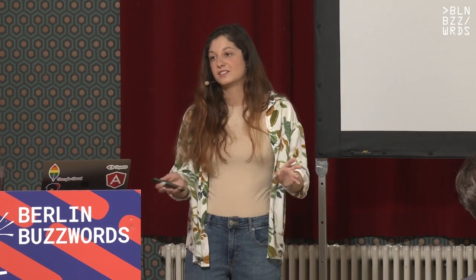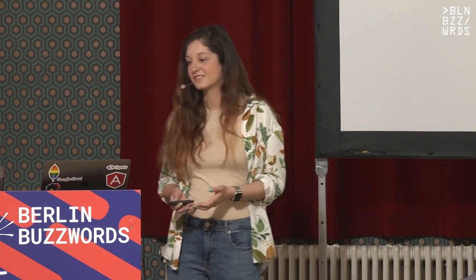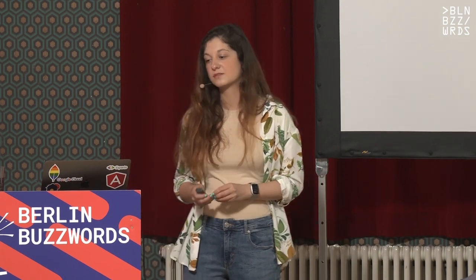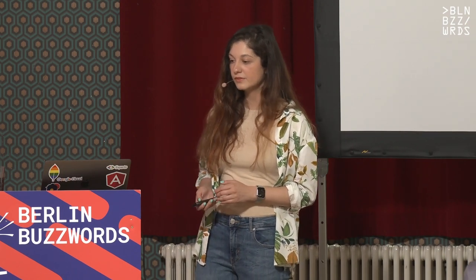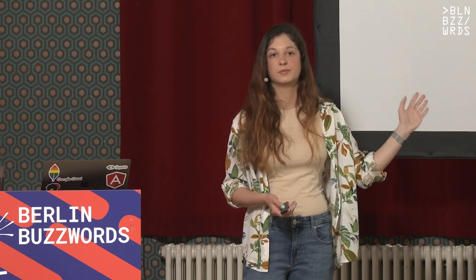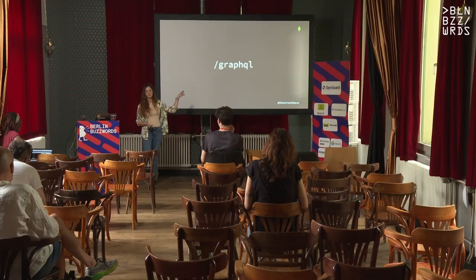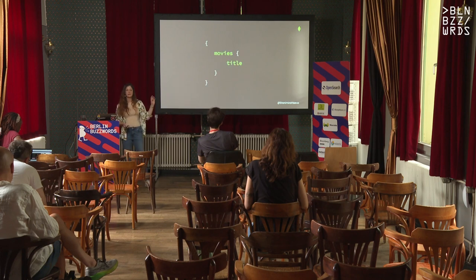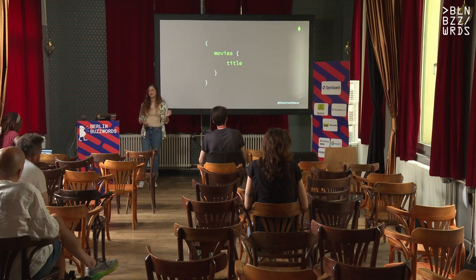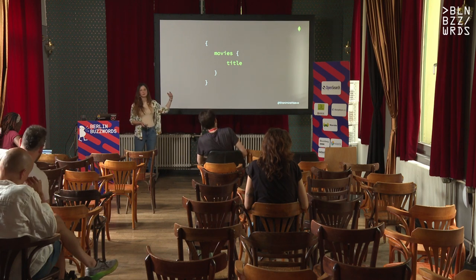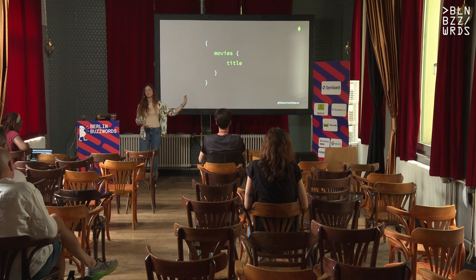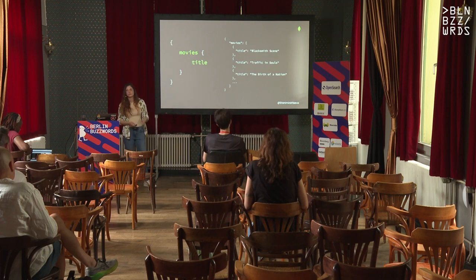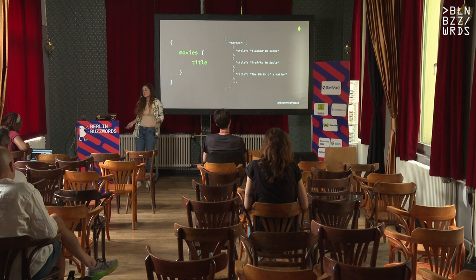GraphQL has its own problems, so don't take it as a one-size-fits-all solution. Just do your research and see if it fits your own product. The difference is that in GraphQL, you have just one single endpoint — by default maybe slash GraphQL. You have a declarative language for building queries. You say: I want movies and I want just the title field from the movies, nothing else. This is what you get in return — just the data that you requested.